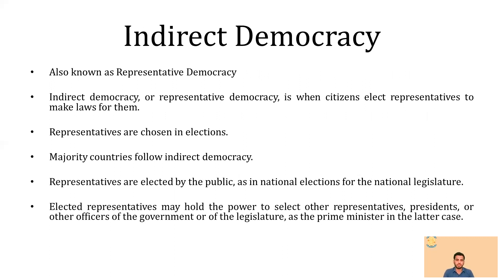Now let's see indirect democracy. This is completely opposite to direct democracy. In direct democracy, you have people directly participating in the decision-making process. But in indirect democracy, there is a difference — people elect their representatives so that they can participate in the decision-making process on behalf of the people. You don't have to vote all the time; you just elect one representative, and that representative will be taking decisions on your behalf.